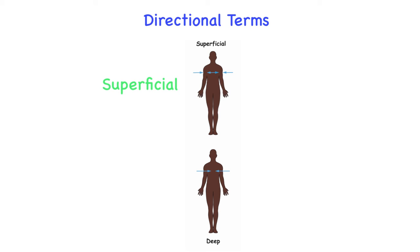The last set of terms are superficial and deep. These terms refer to how close something is to the surface of the skin. Superficial means closer to the surface of the skin, while deep means further down, away from the skin.